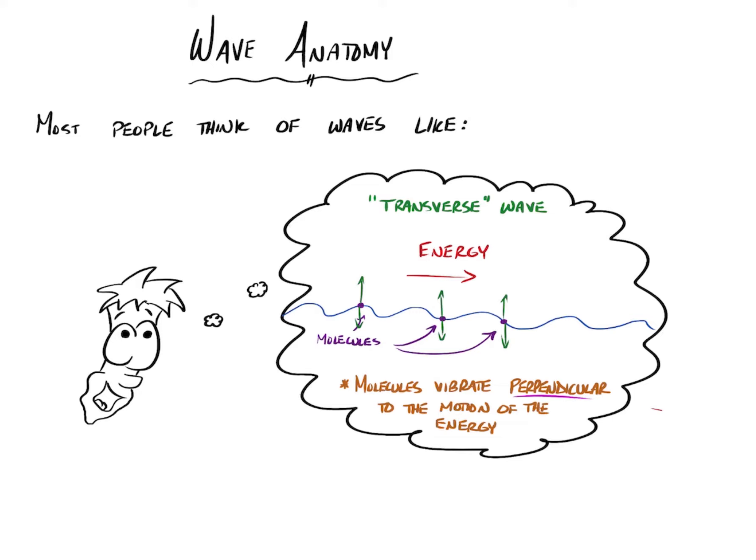So maybe it's easier if you think of a rope. If you tie one end of a rope to a tree and you move your hand up and down, the rope itself, the rope molecules are not leaving your hand. The rope is not getting transmitted over to the tree. You're transmitting energy through the rope. Those molecules are moving up and down, but the energy is transmitted along the perpendicular axis.